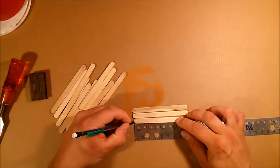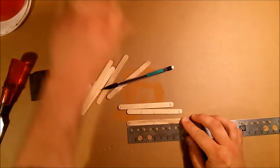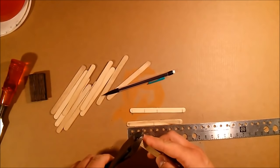Once all three are done, measure off two inch lengths. You should be able to get two per popsicle stick for a total of six.